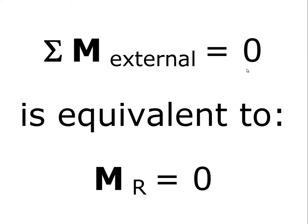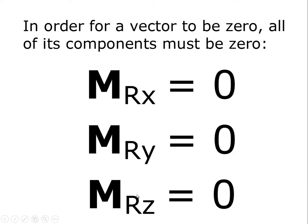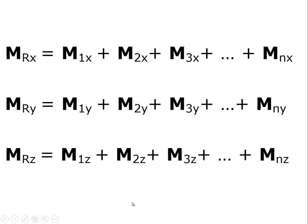Those were all the equations related to translational equilibrium. Now we have a similar set of equations related to rotational equilibrium. The sum of all the external moments on any structure, or any subset of the structure, has to be equal to zero — which is equivalent to saying the resultant moment is equal to zero. This means the x component of the resultant moment is zero, the y component is zero, and the z component is zero. The x component of the resultant moment is the sum of the x components of all the constituent moments.